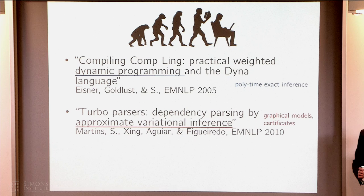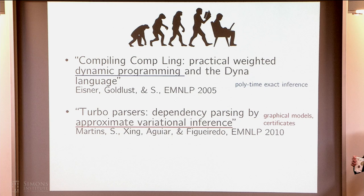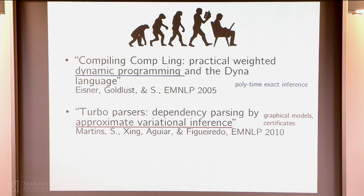However, around 2010 we realized that this kind of inference requires fairly strong independence assumptions to get fast polytime inference. What we really wanted was richer features — the ability to look anywhere in the parse tree and have things interdepend in complex ways. So we moved toward techniques inspired by graphical models, using something called Turbo Parser based on dual decomposition. It's still a really good parser — things get a bit slower but you get much more powerful models. You no longer get exact polytime inference, but when you get the optimal answer you know it.